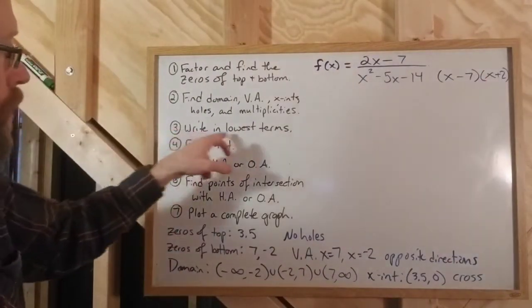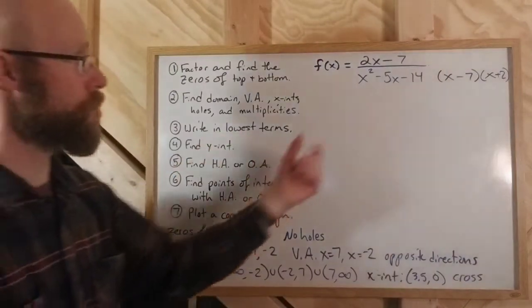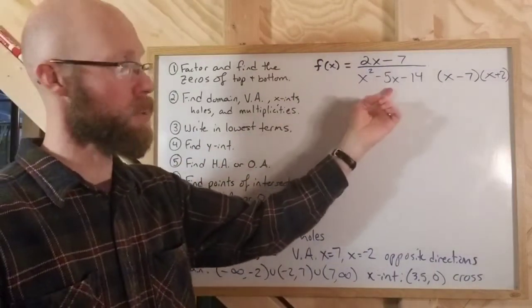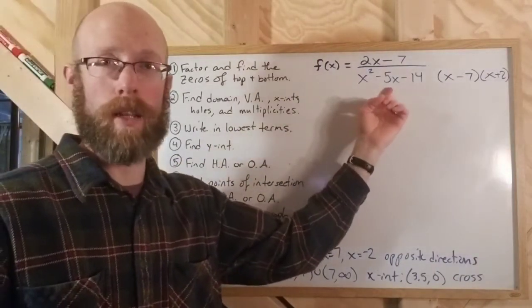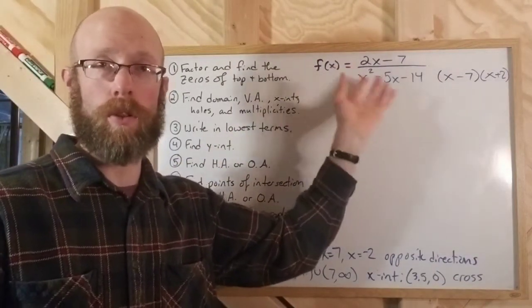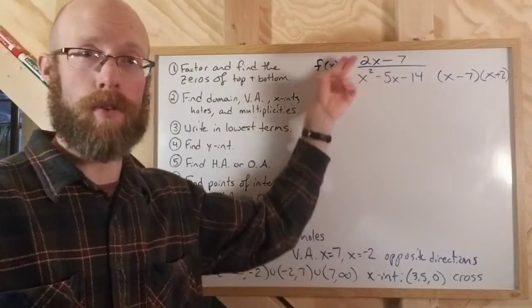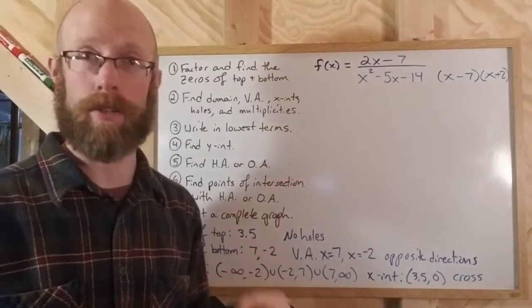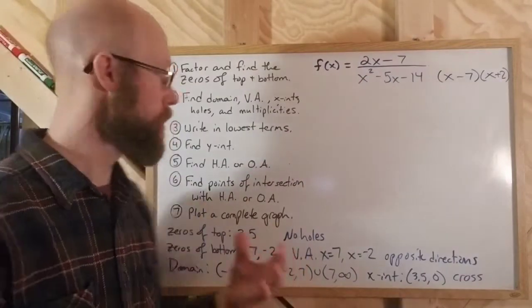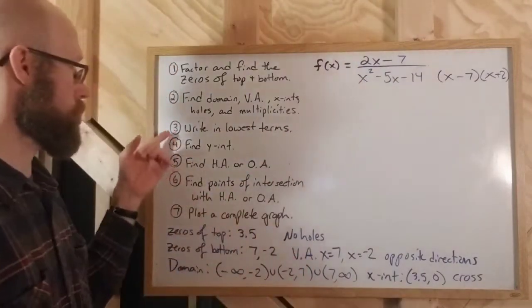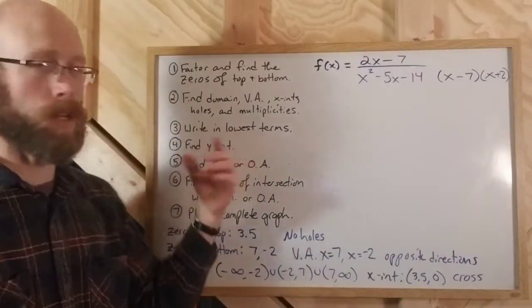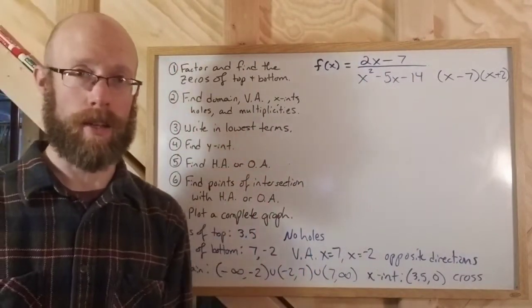Step three says write it in lowest terms. The only way to write it in lower terms is if you have a common factor. Here we do not, so we can actually skip step three — nothing to cancel.